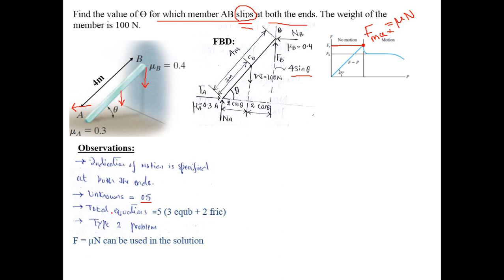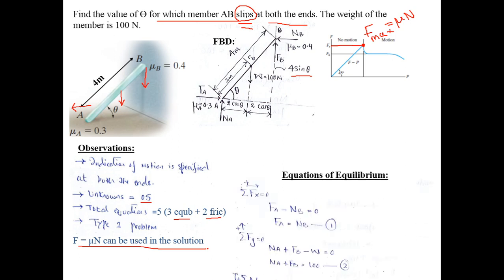For a single rigid body we have three equilibrium equations: ΣFx, ΣFy, and ΣM. We also have two friction equations — F = μN at point A and F = μN at point B — since both are at impending motion. That gives five equations for five unknowns. This is a Type 2 problem, and in Type 2 problems we can use F = μN during our solution.